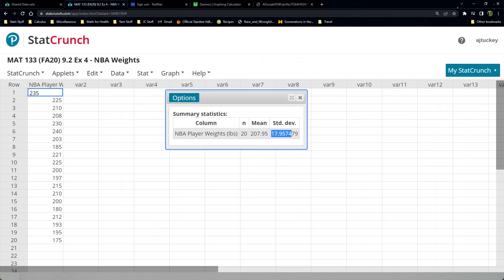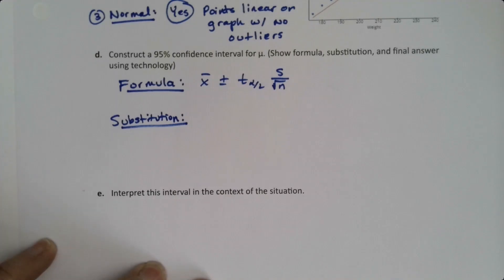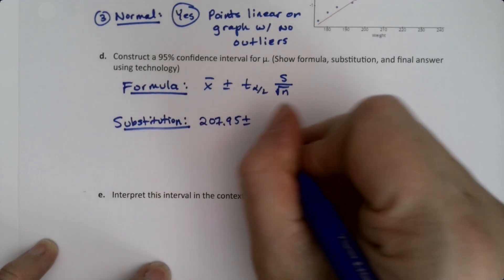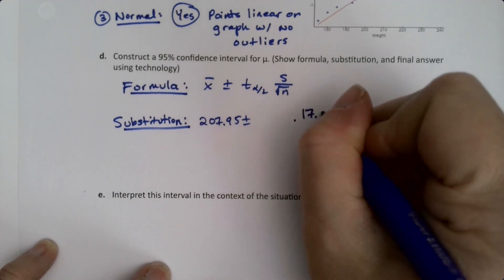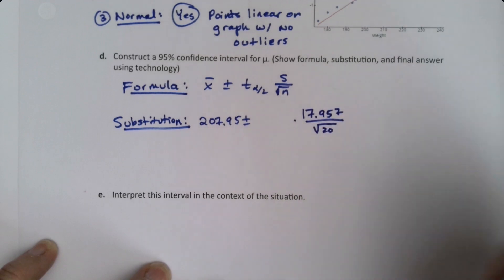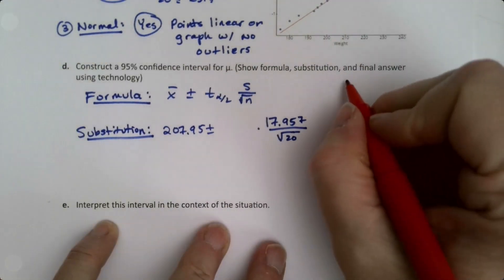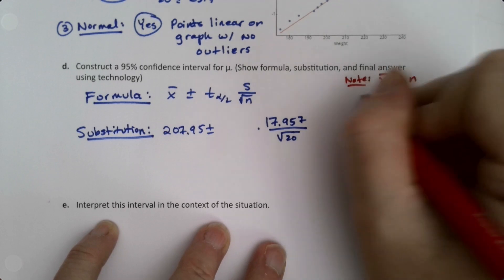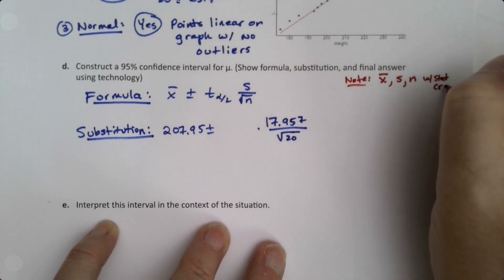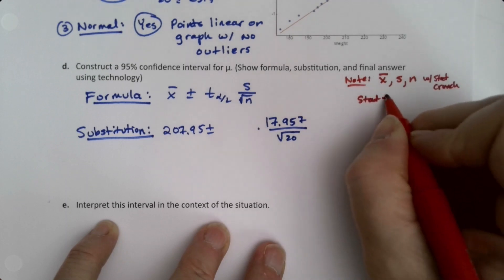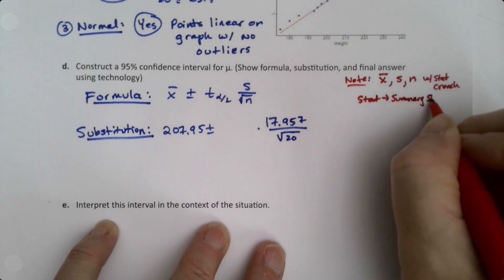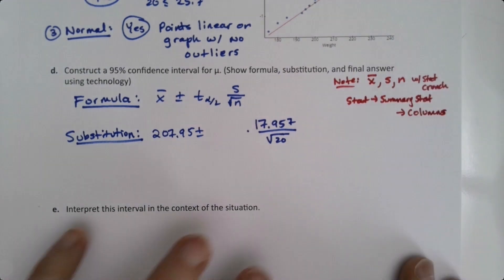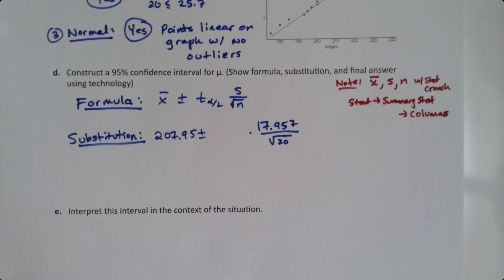So substituting, we have 207.95 plus or minus t-alpha-over-2 times 17.957 over the square root of 20. Note: to find x-bar, s, and n with StatCrunch, use Stat > Summary Stat > Columns. That's note number one — it's been a while since we've done those.